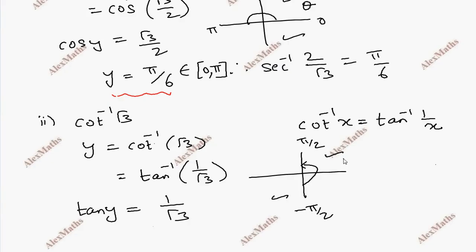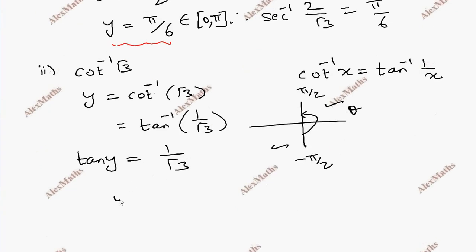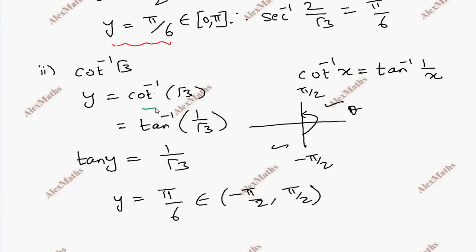So we take the first quadrant value. Since tan(pi by 6) equals 1 by root 3, which is in the first quadrant, y equals pi by 6. This belongs to the range minus pi by 2 to pi by 2. So the answer to cot inverse root 3 equals pi by 6.